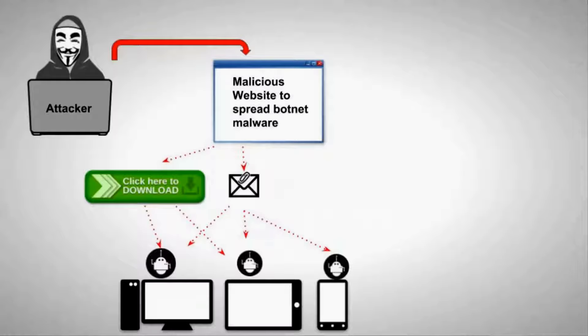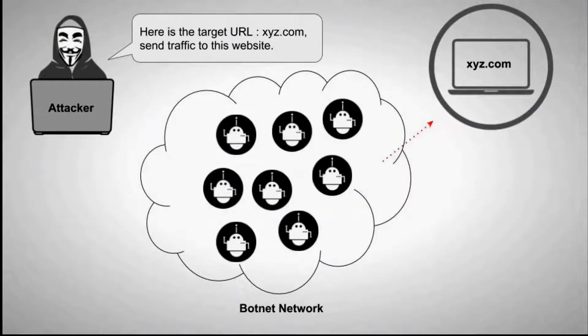These devices can be laptops, desktops, routers, or any device that connects to the internet. Once they are infected, the devices start executing the commands sent by the attacker's server or computer. For instance, an attacker server commands: here is the target server URL — a.com — send traffic to this website, and every device infected with that malware will start executing commands sent by the attacker.